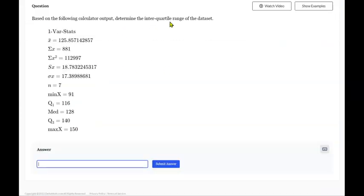This one asks you to determine the interquartile range. So the interquartile range is the distance from Q1 to Q3. So that's 140 minus 116. We'll type that here, and we're good.